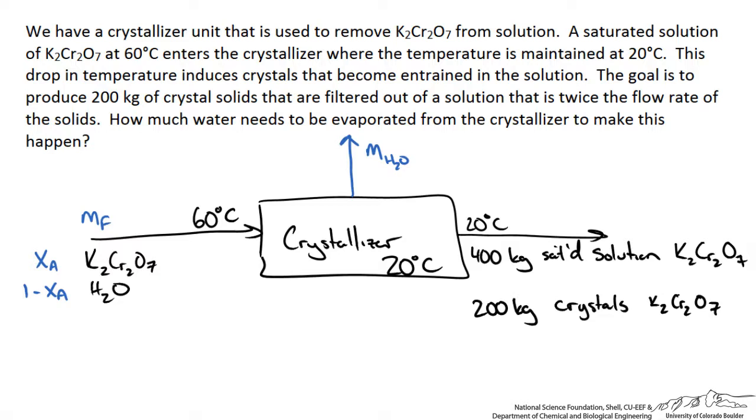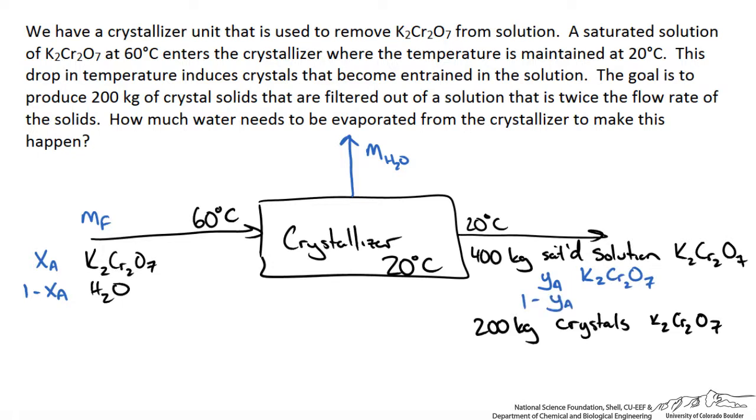We have the mass flow rates of the saturated solution and crystals of our potassium dichromate. However, we do not know the concentration of that saturated solution. So I will call that YA, the mass fraction of the potassium dichromate in the exiting stream, and 1 minus YA for the mass fraction of water. So how do we determine what those compositions are? As you can see, we cannot really do any material balances without figuring out some more information.